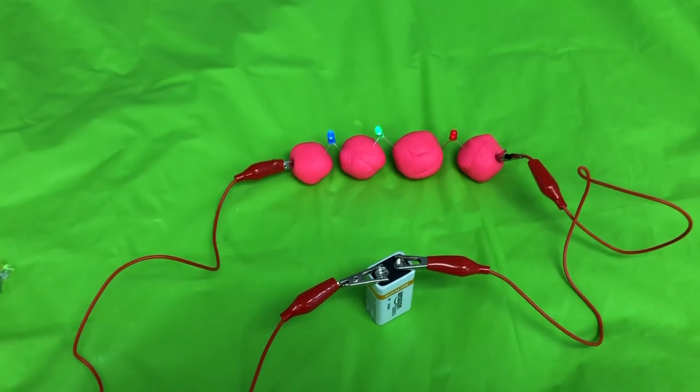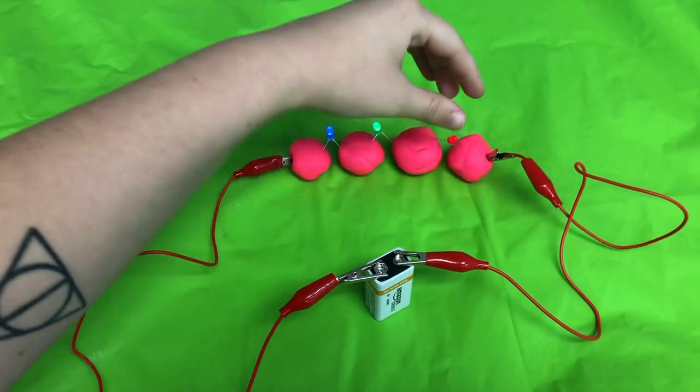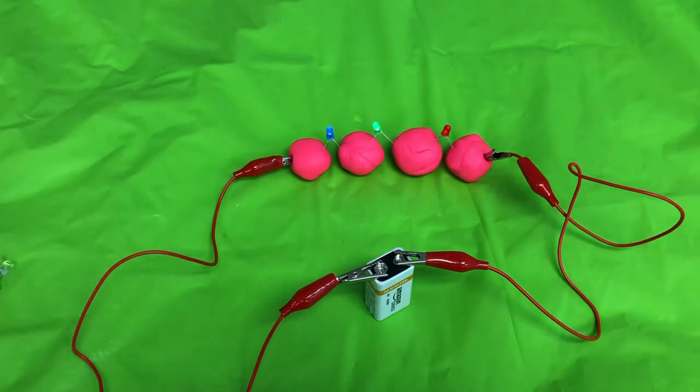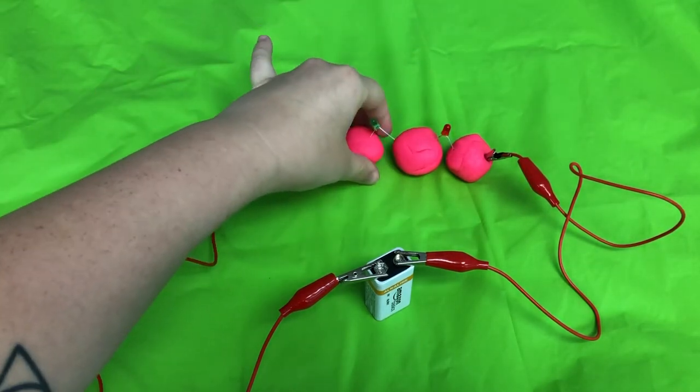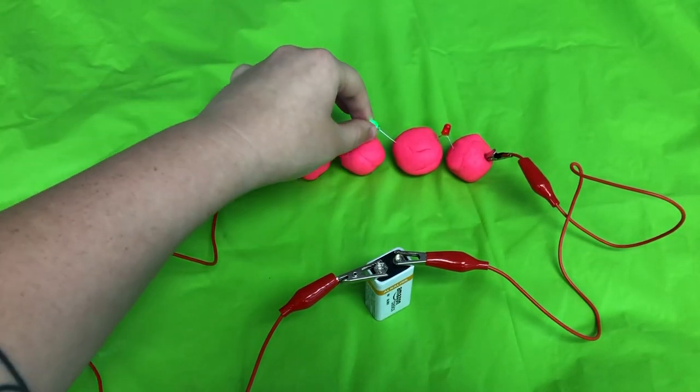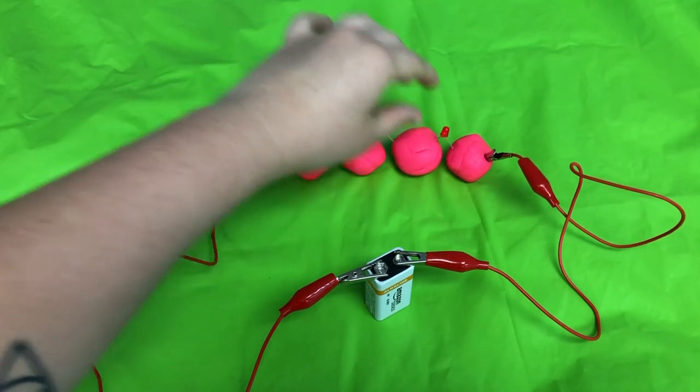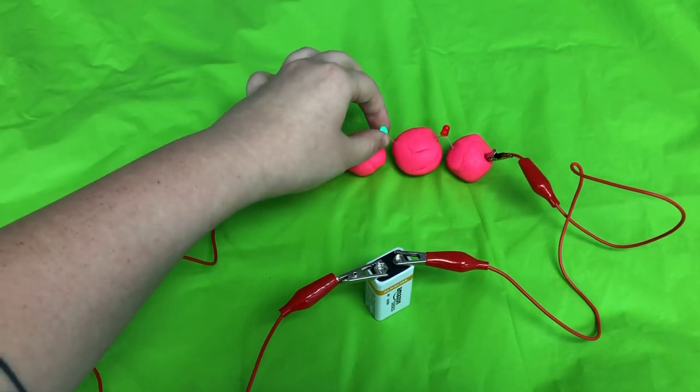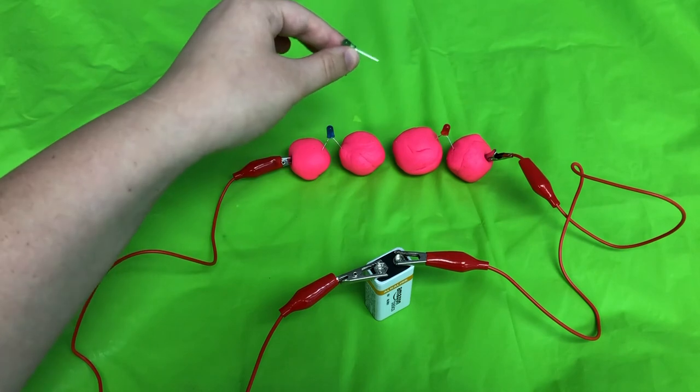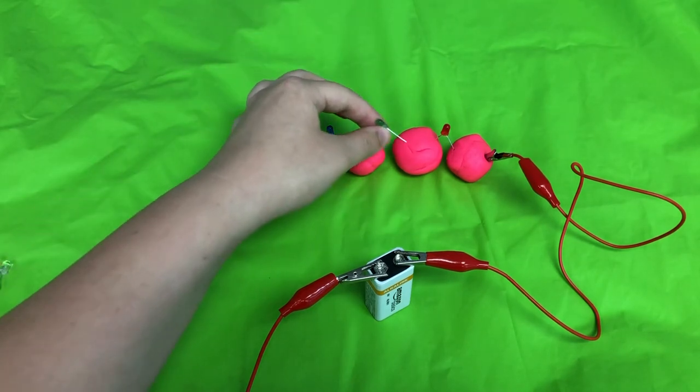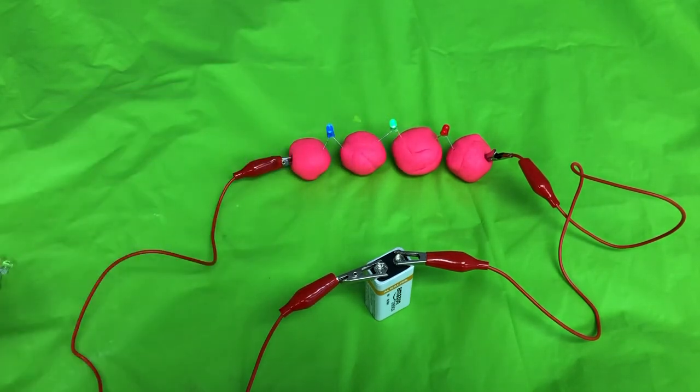So you can see now the lights aren't as bright as they were when it was just the two. That's because the electricity is being shared between a longer circuit, but you can still see that they are lighting up. If I were to take out the green one in the middle it's breaking the circuit and it no longer works, but as long as they are all touching it will still work.